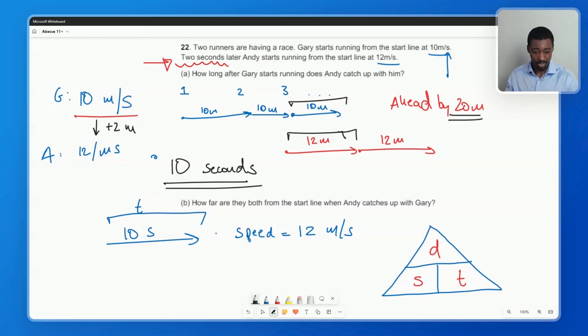So now back to this question, how far are they both from the start line? So the word far lets us know we're looking at distance. So here we want the speed and we want to multiply that by the time. So the time Andy takes to catch up is 10 seconds. The speed is 12 meters per second and therefore the distance is going to be 120 meters. That is our answer.